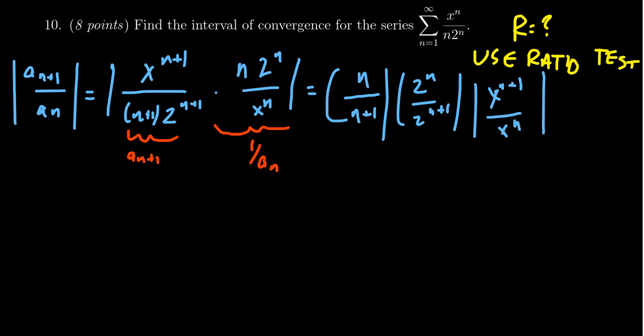Notice I dropped the absolute values except for x, because as n goes from 1 to infinity, n is always positive. So n over n plus 1 is positive, and exponentials are always positive, like 2 to the n. Taking absolute value of positive terms is redundant, but since x could be negative, the absolute value is still necessary there.